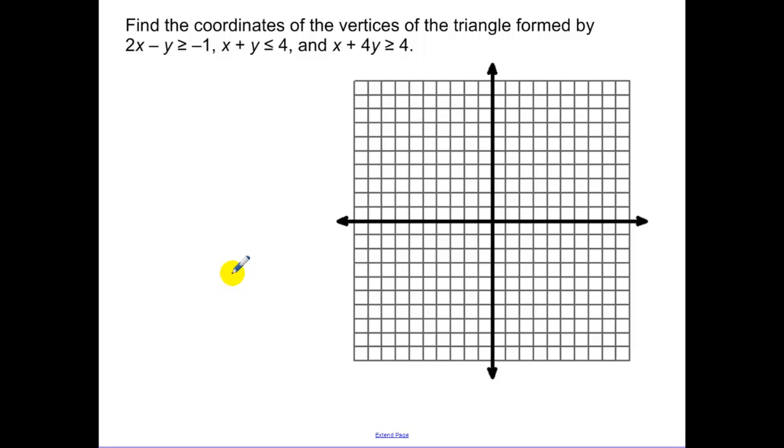Our next one, find the coordinates of the vertices of the triangle formed by these equations. The first one, let's solve this for y. I'm going to add the y over and add the 1 over. So I have 2x plus 1 greater than or equal to y. Or we can look at it like that. Go up 2 over 1. Make sure you plot out these. So there's one of ours.